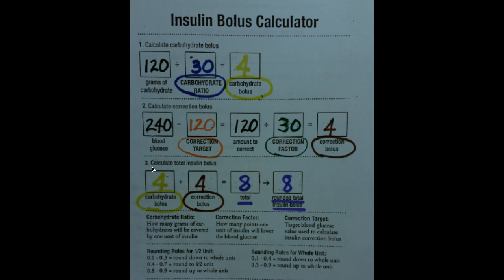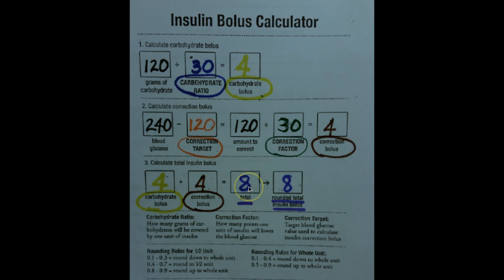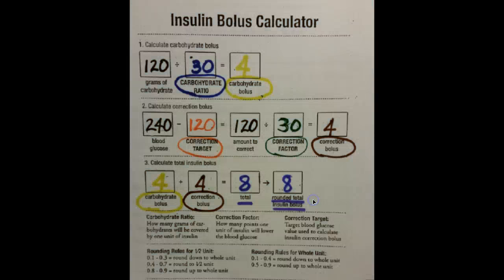In step 3, we add the carbohydrate bolus and the correction bolus together: 4 plus 4 gives us a total insulin dose of 8 units. Remember, in this case we're rounding to the nearest whole unit, and since 8 is already a whole unit, we leave it as is. So we will be giving 8 units of insulin to the student for this snack. At the bottom of the insulin calculator, there's a helpful table covering how to round to the nearest whole number and nearest half unit.